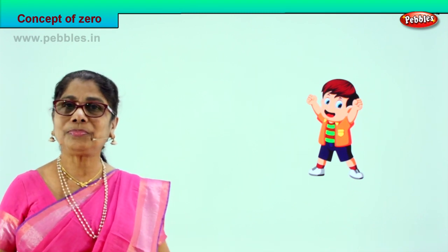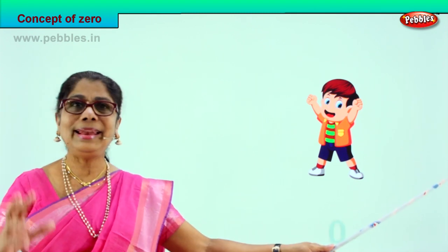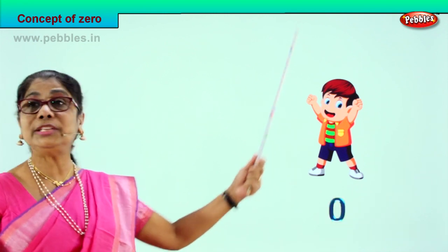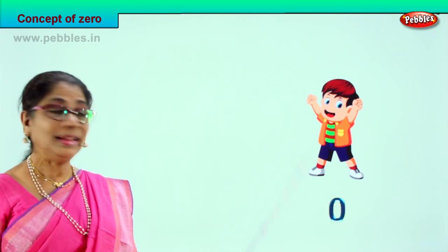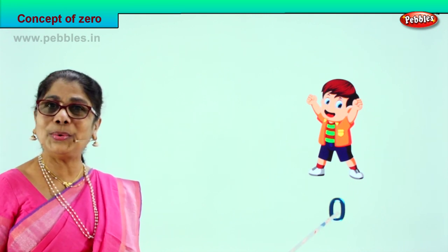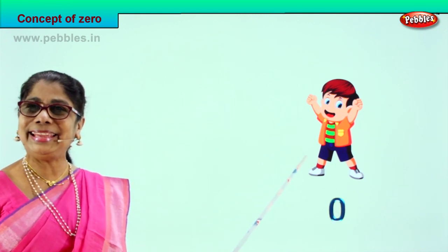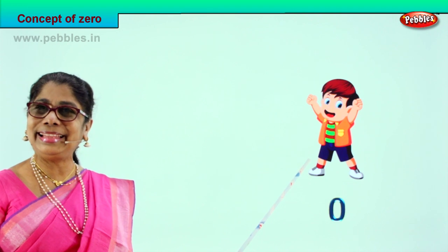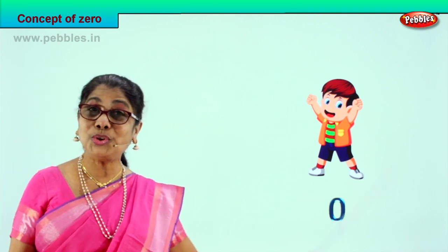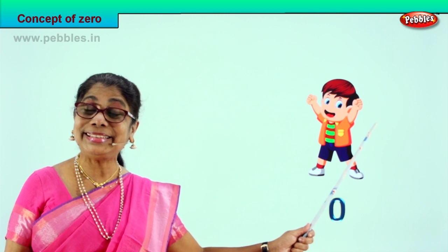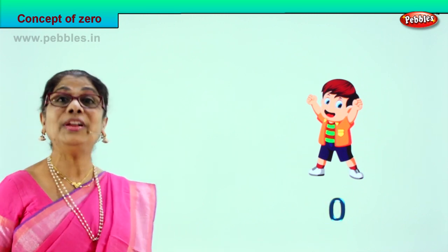How many bubbles are left? Nothing. Look at the boy — he's looking at his hand, nothing left. So what do we write? Zero. Empty, his hands are empty. Nothing. Zero. Did you understand? Did you enjoy doing this? You understand what is zero now? Good.